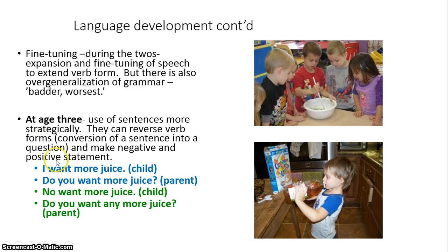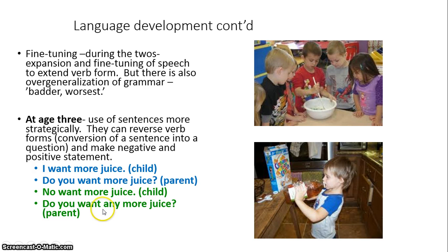By age three, children begin to use sentences. They might say, 'Want more juice?' and the parent may ask back, 'Do you want more juice?' or 'Do you want any more juice?' — just to confirm and to model for the child how questions are properly asked, and that they should be saying, 'I do not want any more juice.' That dialogue helps develop their language further.